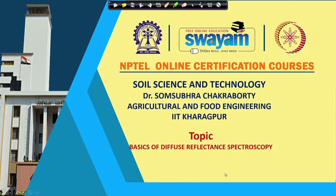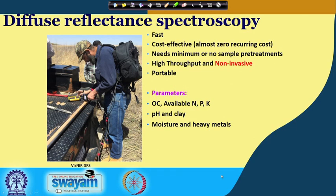We have finished geostatistics and now we move ahead to start a new topic: the basics of diffuse reflectance spectroscopy. Diffuse reflectance spectroscopy has become a very important tool in the hands of soil scientists because we use it for extensive analysis of different soil features — physical, chemical, and biological soil properties.